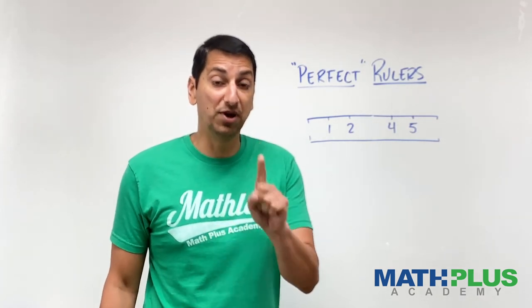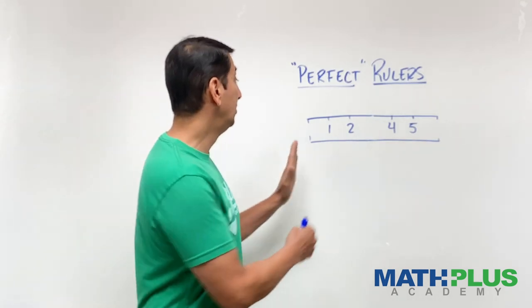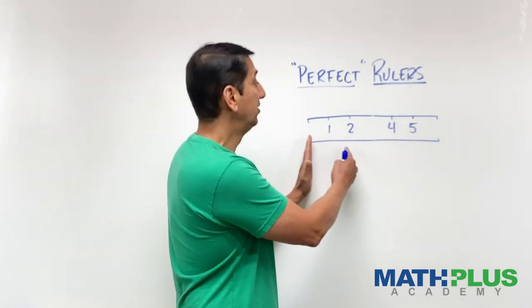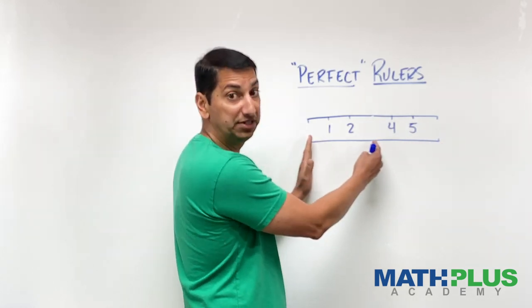Save some ink there. Could I still measure things that were one, two, three, four, five, and six units long? Well, one and two, that would be easy. Four and five and six would be easy. But how do I measure something that's three units long now?